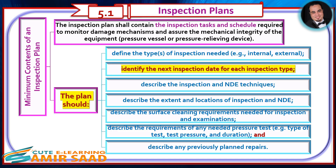The plan should define the types of inspection needed — for example, internal or external. It should identify the next inspection date for each inspection type, describe the inspection and NDE techniques, describe the extent and locations of inspection and NDE, describe the surface cleaning requirements needed for inspection and examinations, describe the requirements of any needed pressure test (for example, type of test, test pressure, and duration), and describe any previously planned repairs.